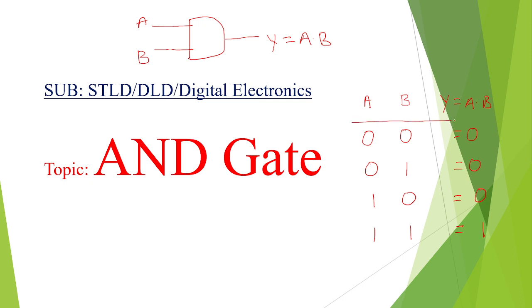So this is the truth table for the AND gate. The AND gate has two inputs with different possible combinations, and you can see the corresponding outputs.